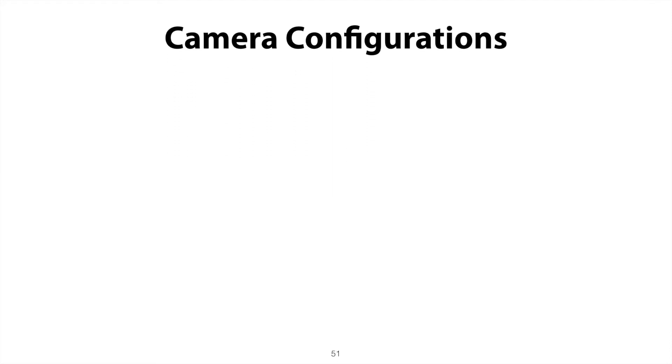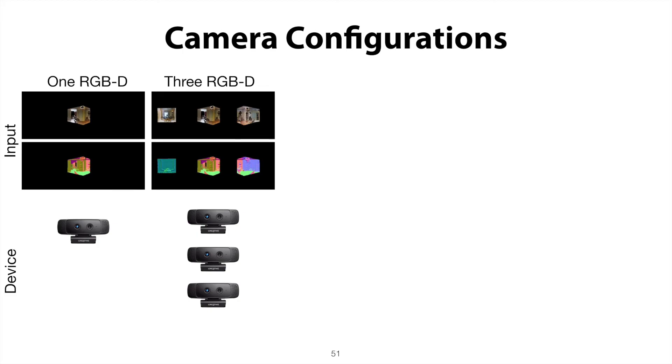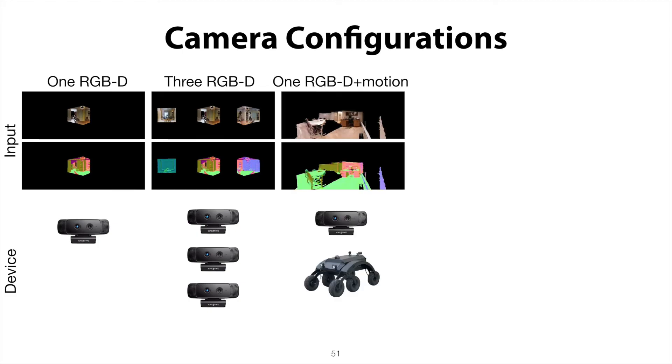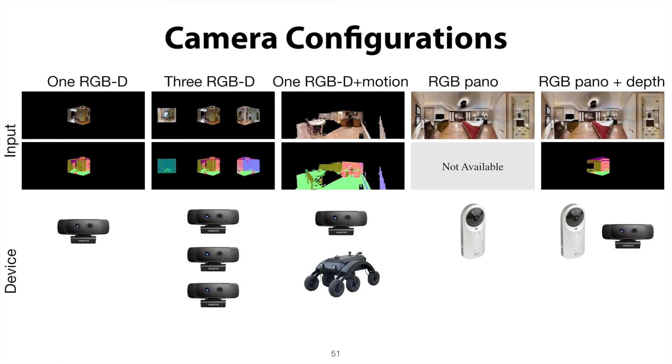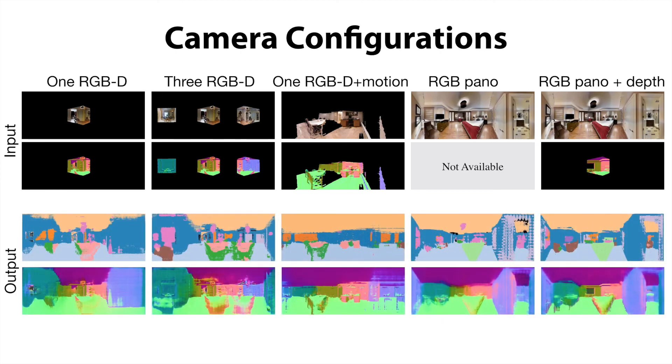Here we show how our method can generalize to other camera configurations. The camera configurations we consider include single or multiple registered RGBD cameras, single RGBD camera capturing a short video sequence, color only panoramic camera, and a panoramic camera paired with a single depth camera. For all of these camera configurations, our method provides a unified framework that effectively fills in the missing 3D structure and semantic information of the unobserved scene.